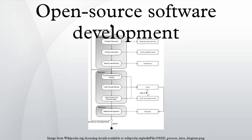Starting an open source project: There are several ways in which work on an open source project can start. An individual who senses the need for a project announces the intent to develop a project in public. A developer working on a limited but working code base releases it to the public as the first version of an open source program. The source code of a mature project is released to the public, or a well-established open source project can be forked by an interested outside party. Eric Raymond observed that announcing the intent for a project is usually inferior to releasing a working project to the public.